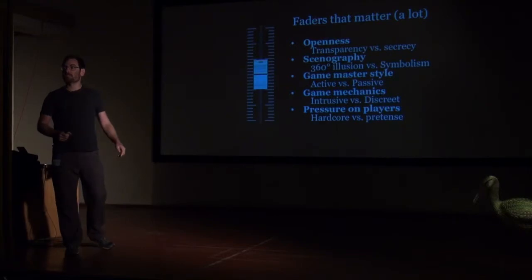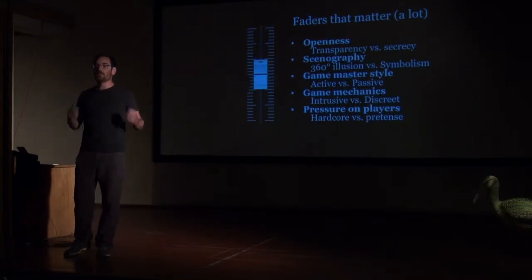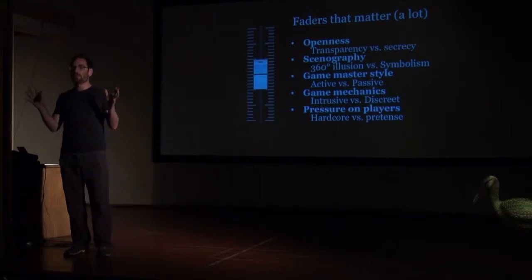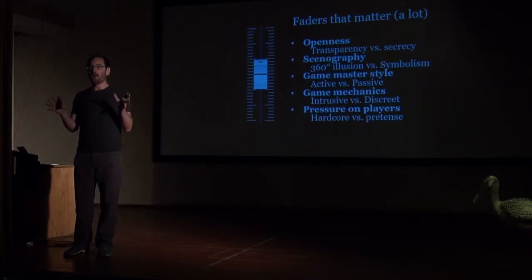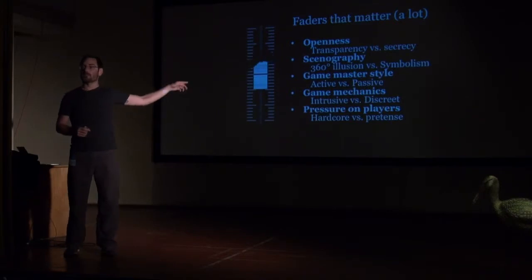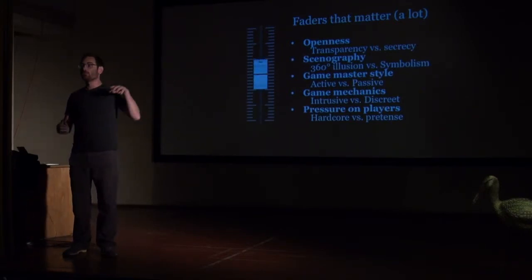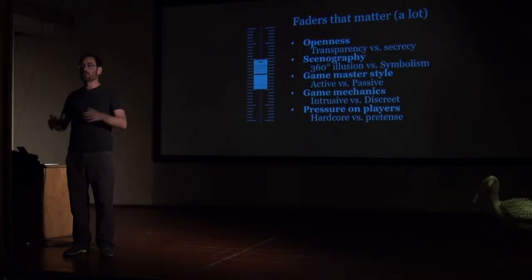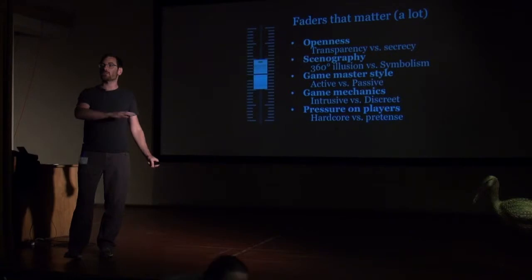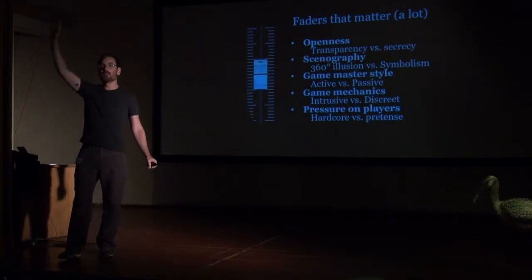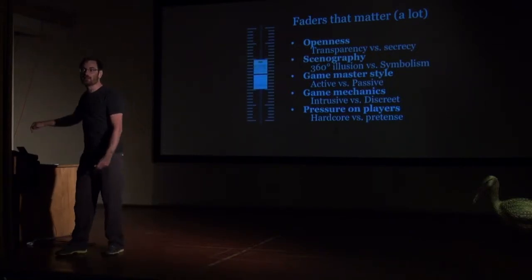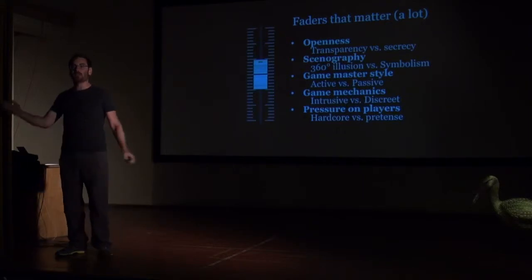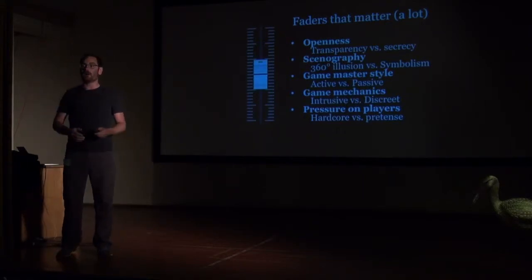Scenography — if you have a 360 illusion, it takes a lot of energy to keep that illusion alive at all times during the game. Or at the other end, if you use symbolism, you have to put those symbols into the game. For instance, if I wanted to give the illusion that there was an aircraft traveling over, I had to press play on the sound system at the right time so there would be an aircraft flying over the house.